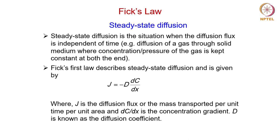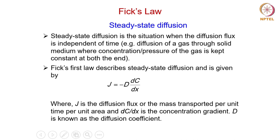Fick's first law describes steady-state diffusion where it is not dependent on time, and the diffusion primarily takes place based on the concentration gradient. Here, dc/dx is the concentration gradient where c represents concentration and x is the distance. J is the diffusion flux — the mass transported per unit time per unit area. D is known as the diffusion coefficient. The negative sign indicates that mass transport happens from higher concentration to lower concentration, meaning dc/dx is negative.